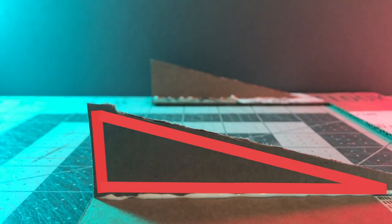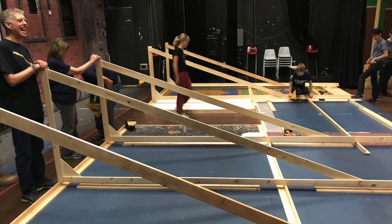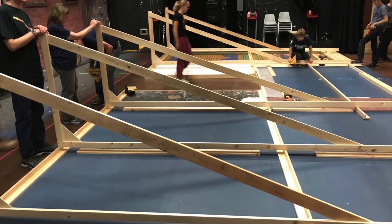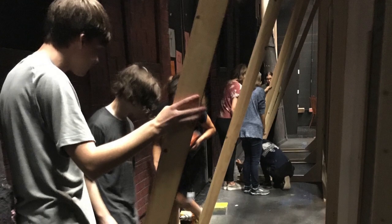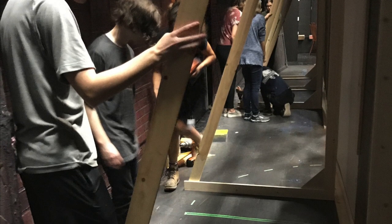Jacks are triangular frames used to brace and provide lateral support to flats. Jacks can be built in a variety of shapes and sizes and are the most common way of bracing stage scenery.